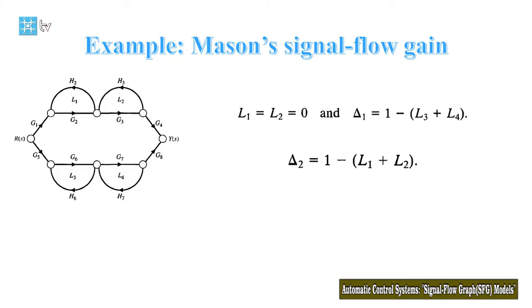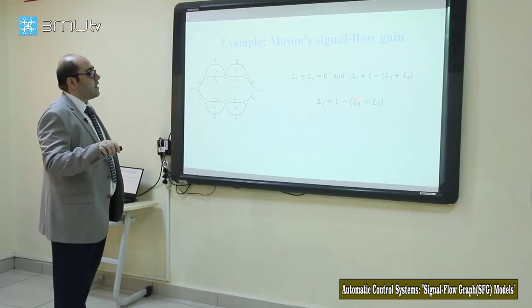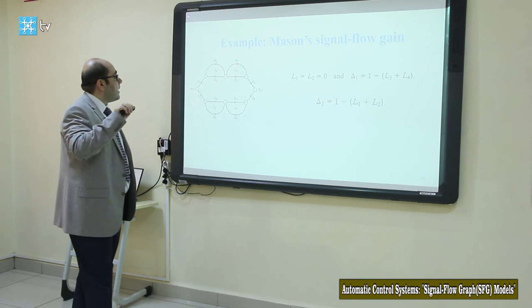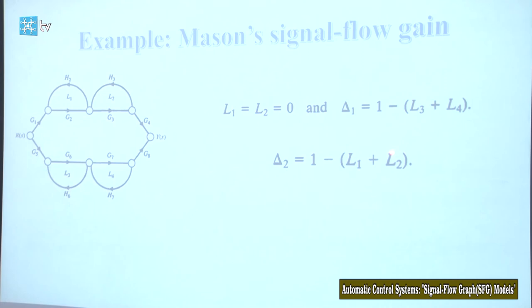Similarly for delta_2: we assume all loops through the second path are zero, so L3 and L4 become zero. We only have L1 and L2 remaining, and again there are no non-touching loops among them, so delta_2 = 1 − (L1 + L2).